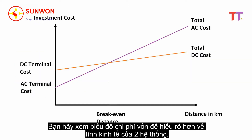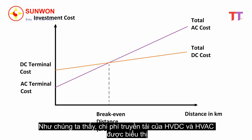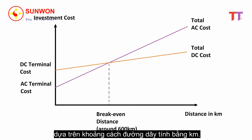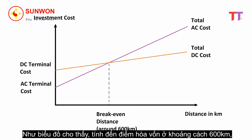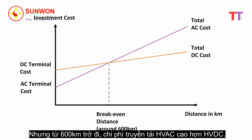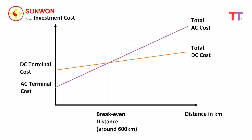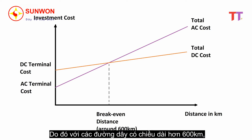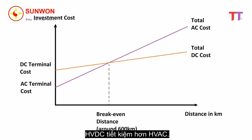Considering the capital cost, and for better understanding of the economics of both systems, let's see the graph. As we can see in the graph, HVAC transmission cost and HVDC transmission cost is plotted against distance of transmission lines in kilometers. As shown in the graph, up to the break-even point — that is around 600 kilometers — cost of HVDC transmission is higher than that of HVAC transmission. Whereas after 600 kilometers, cost of HVAC transmission is higher than that of HVDC transmission. Hence for transmission beyond 600 kilometers, HVDC transmission system is economical as compared to HVAC transmission system.